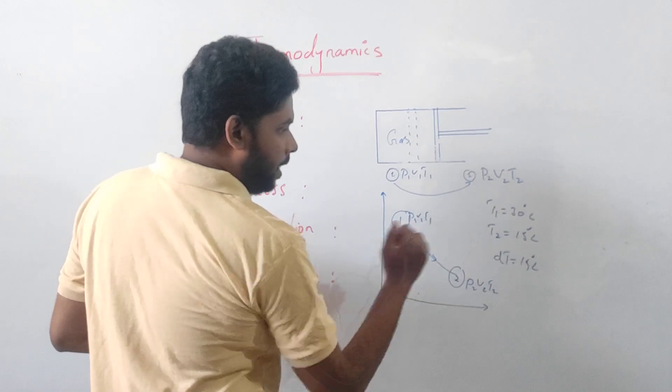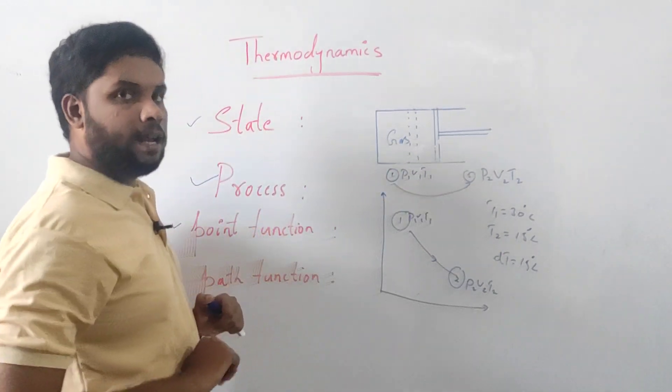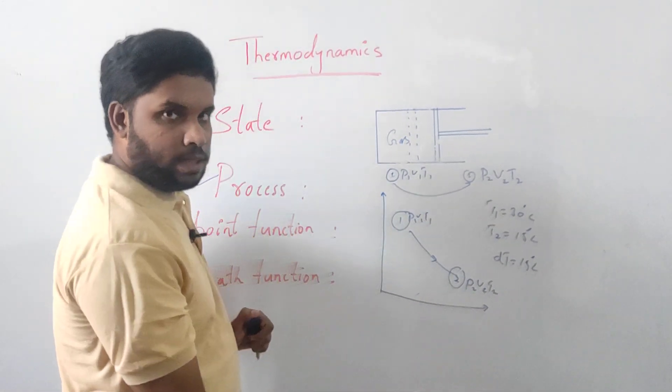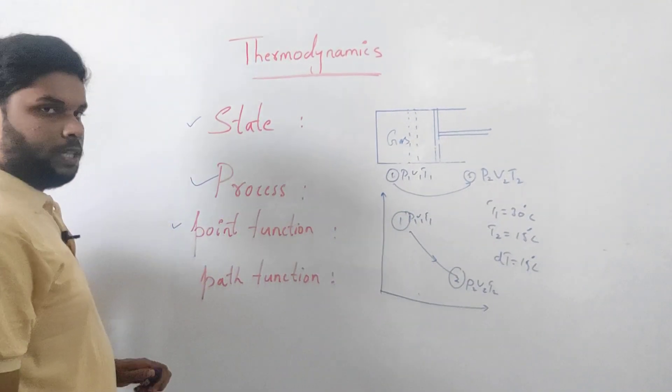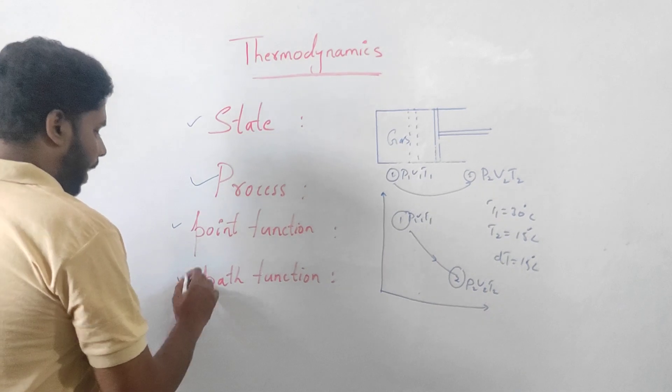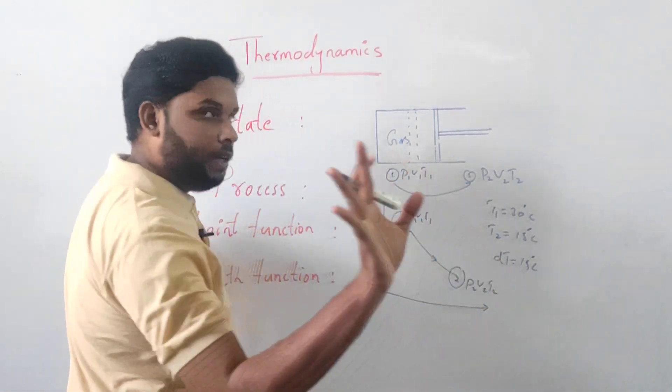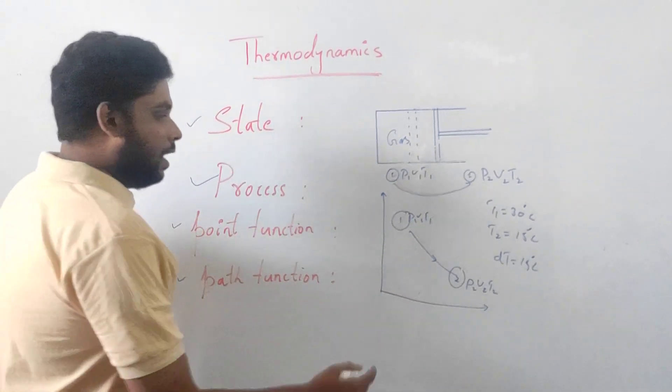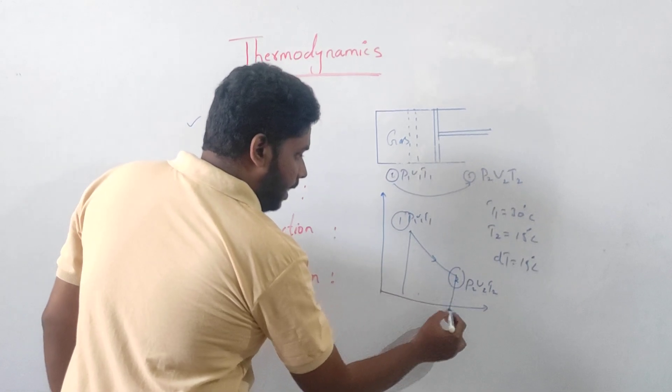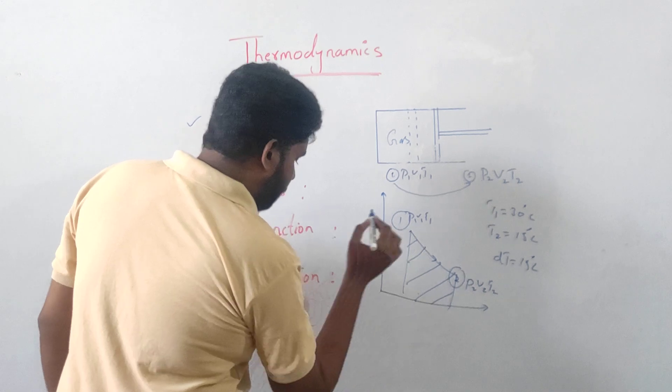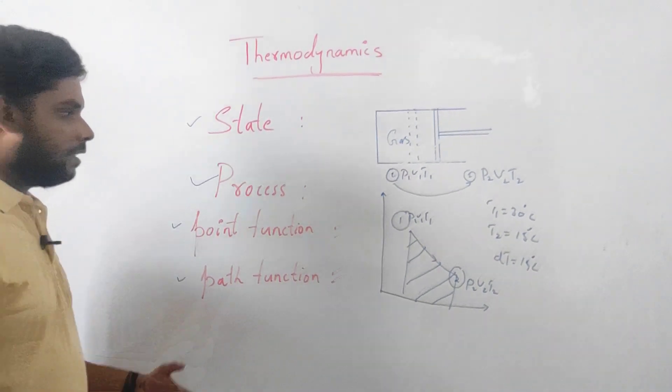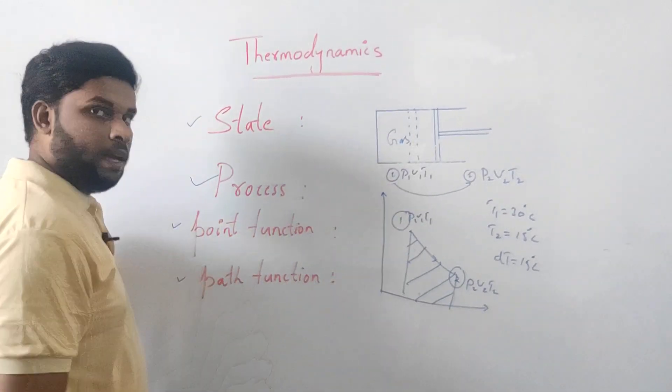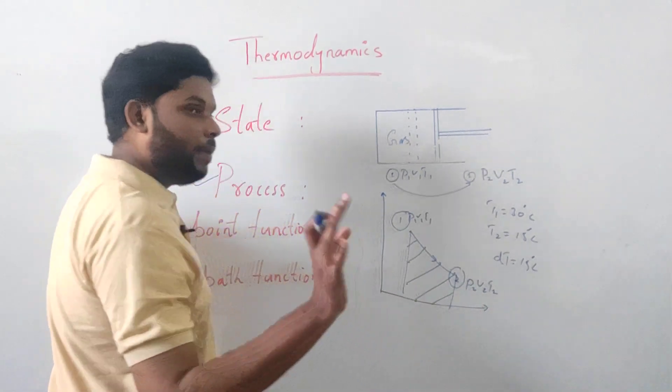Next, path function. Path function is that where the initial and final points depend on how you have achieved state one to state two. In the graph, the area under the curve will give the path function. How you have achieved this from state one to state two - that is called path function.